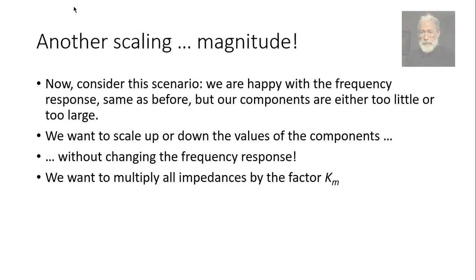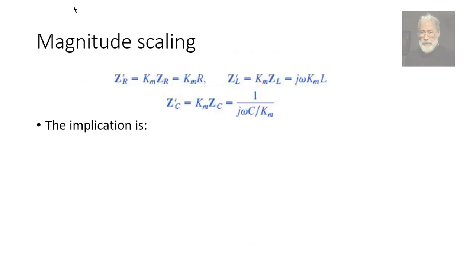we multiply all impedances by a factor 10 or a hundred or a thousand, all of them by the same factor km. The voltages in each element are not going to change. The currents will change, but not the voltages. So that is the trick. We want to multiply all impedances by a factor km. So multiply the resistors by the factor km, multiply inductors by the factor km. But capacitors, because the capacitance is in the denominator of the impedance of the capacitor, we need to divide the capacitor by km. So that is the plan. The implication is when we're scaling the magnitude, multiply resistors by km, multiply inductors by km, and divide capacitors by km. The frequency remains the same in this operation.